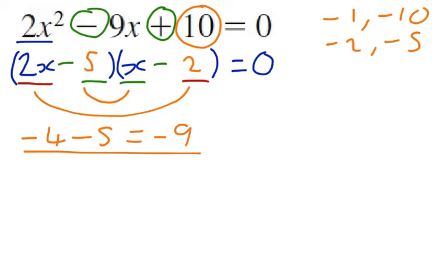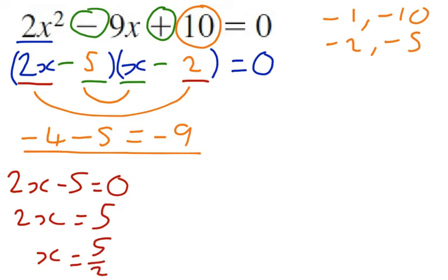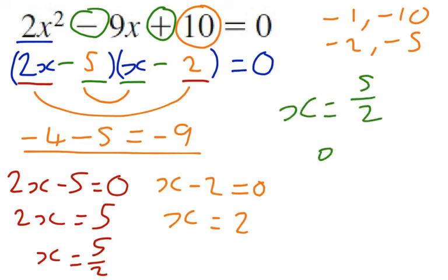Now we do the same thing. Now that we've found our brackets, we do 2x minus 5 equals 0. So 2x equals 5. So x equals 5 over 2. And x minus 2 equals 0. So x equals 2. This gives us a final answer of x equals 5 over 2 or x equals 2.